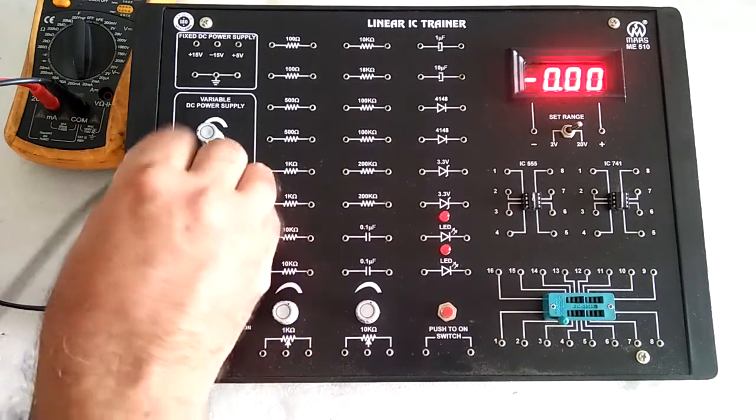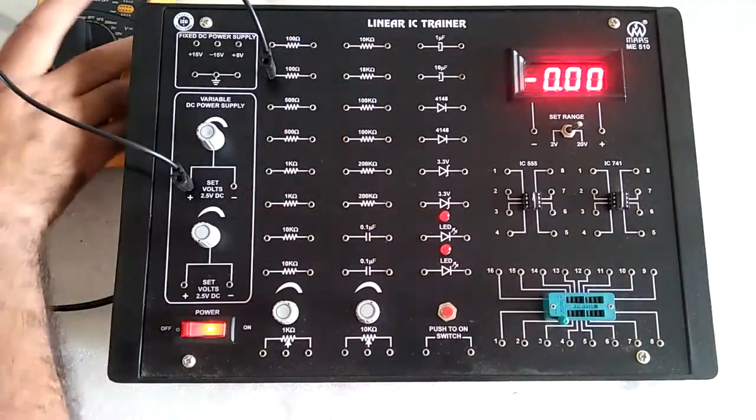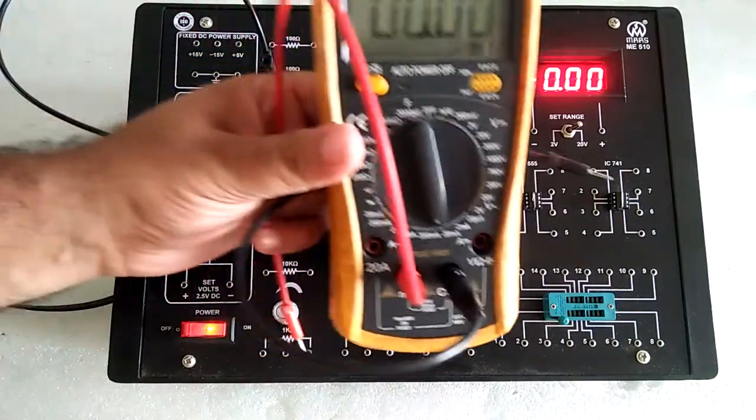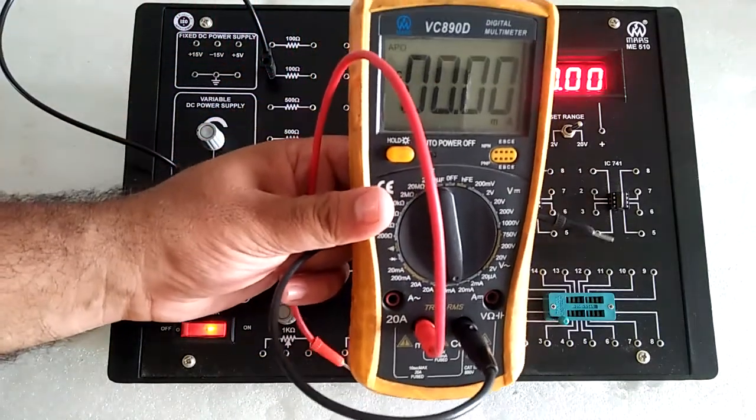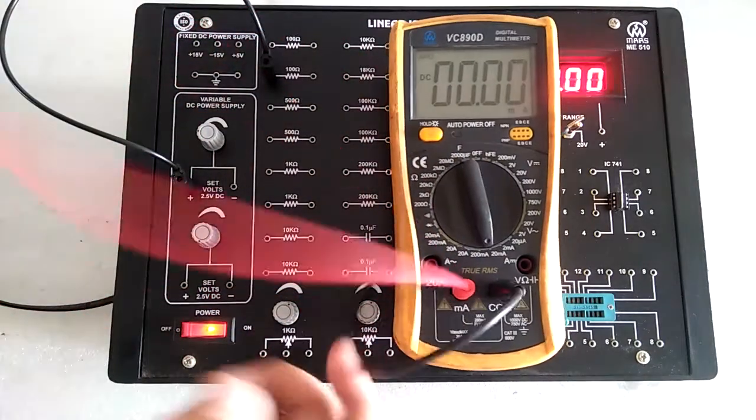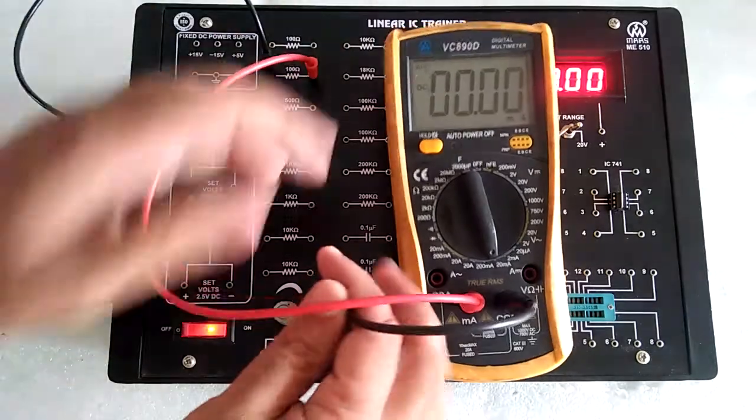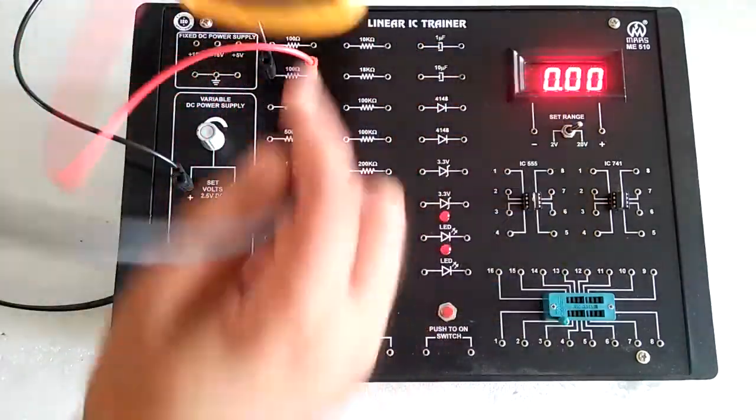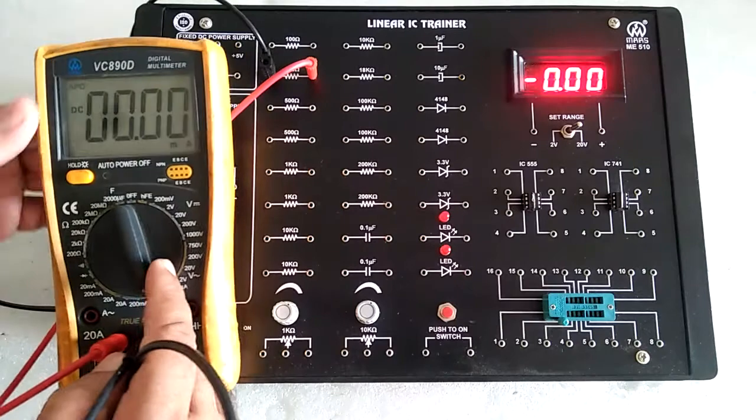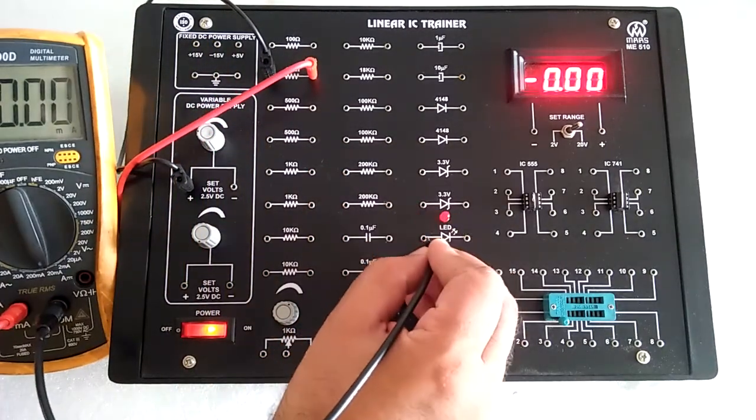For this, connect the positive supply. Choose any resistance. I'm using an optional multimeter set to 20mA current range. Connect this resistance and meter in series with the LED.